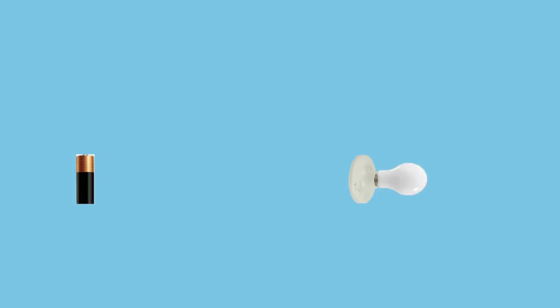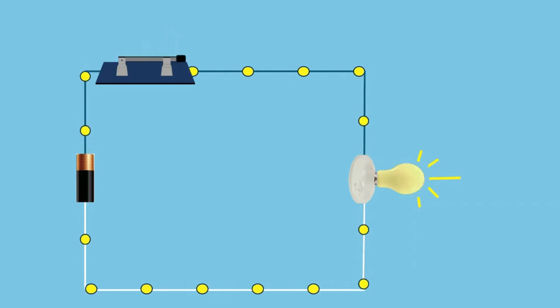And here's a simple DC circuit, with a battery, and a switch, and a light bulb. Current flows steadily, as represented by the yellow dots powering the light bulb. There's no oscillation, no phase shifts, just pure steady energy flow.